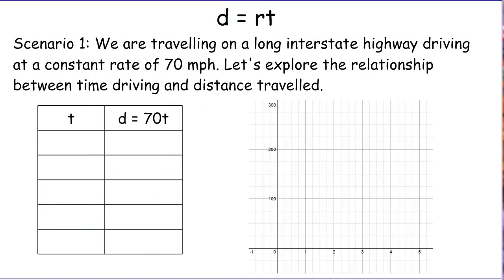Hello, it's Mr. T and today we have a tutorial on a class of functions or relationships called variations. We're going to begin our exploration of variations using a common formula I call the DIRT formula — distance equals rate times time.